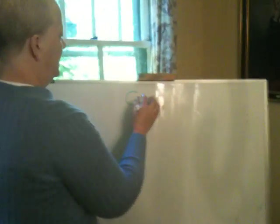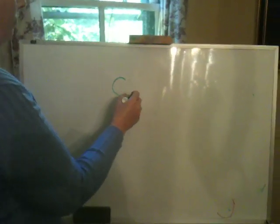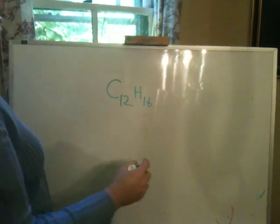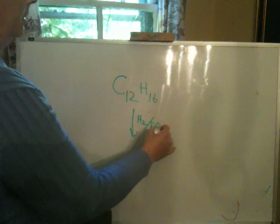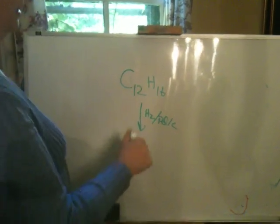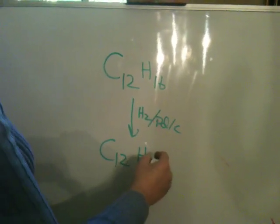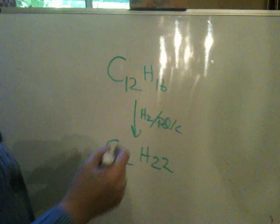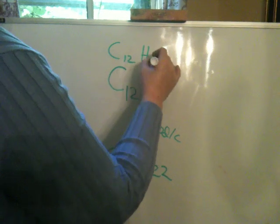The problem I gave you was this unknown compound with formula C12H16, and then I said upon catalytic hydrogenation, which means adding hydrogen with palladium on carbon, you would get C12H22. So what we had done was we worked on the unsaturation numbers of these.